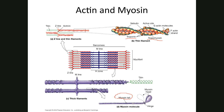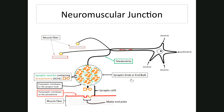The neuromuscular junction is where the nerve and muscle communicate. Your notes describe a space bordered by an axon terminal (also called a synaptic knob or end-bulb) on one side, and the sarcolemma — the plasma membrane of the muscle cell — on the other. The thin branches off the end of an axon are dendrites, which conduct impulses toward the cell body, and only one axon leaves.